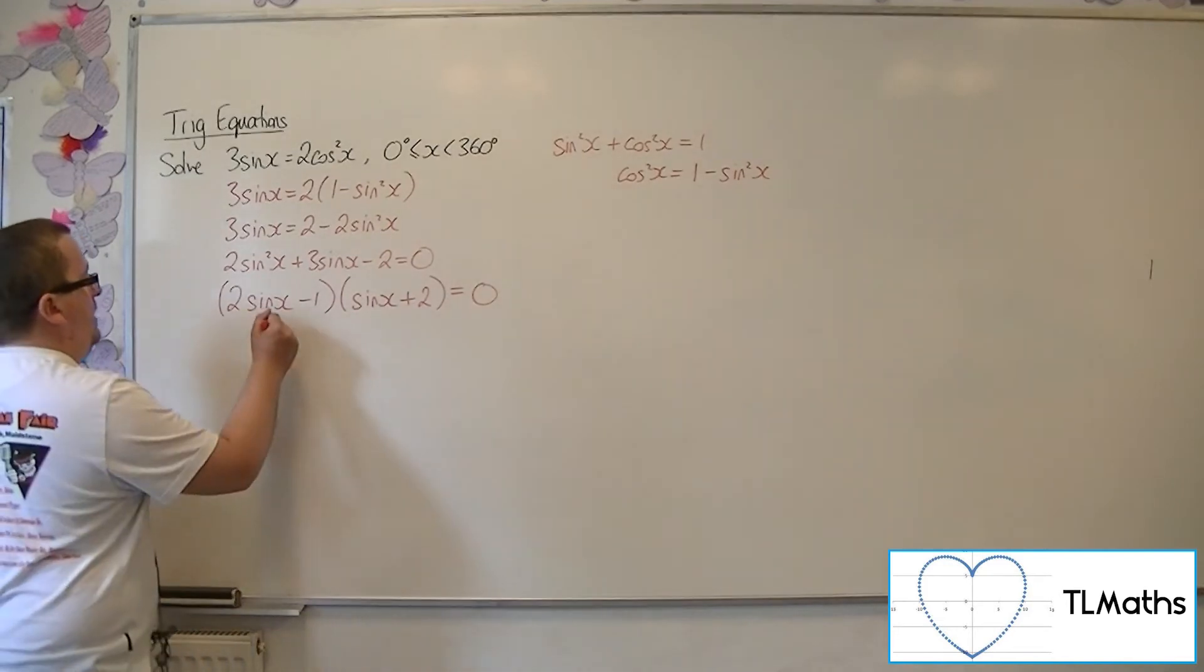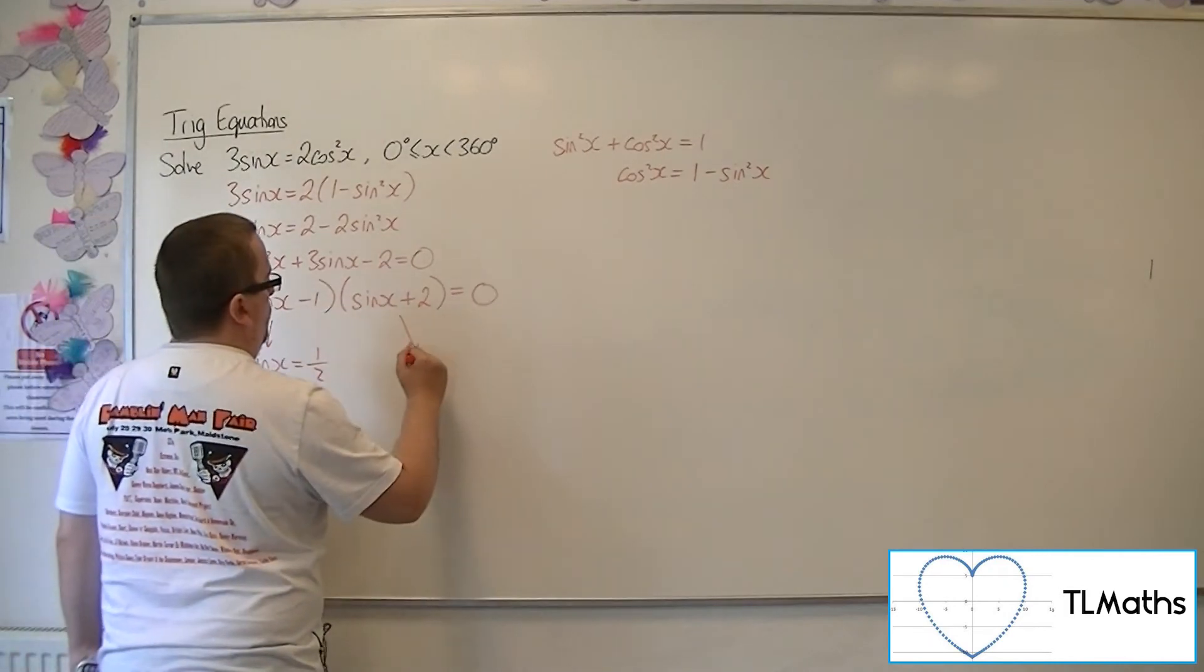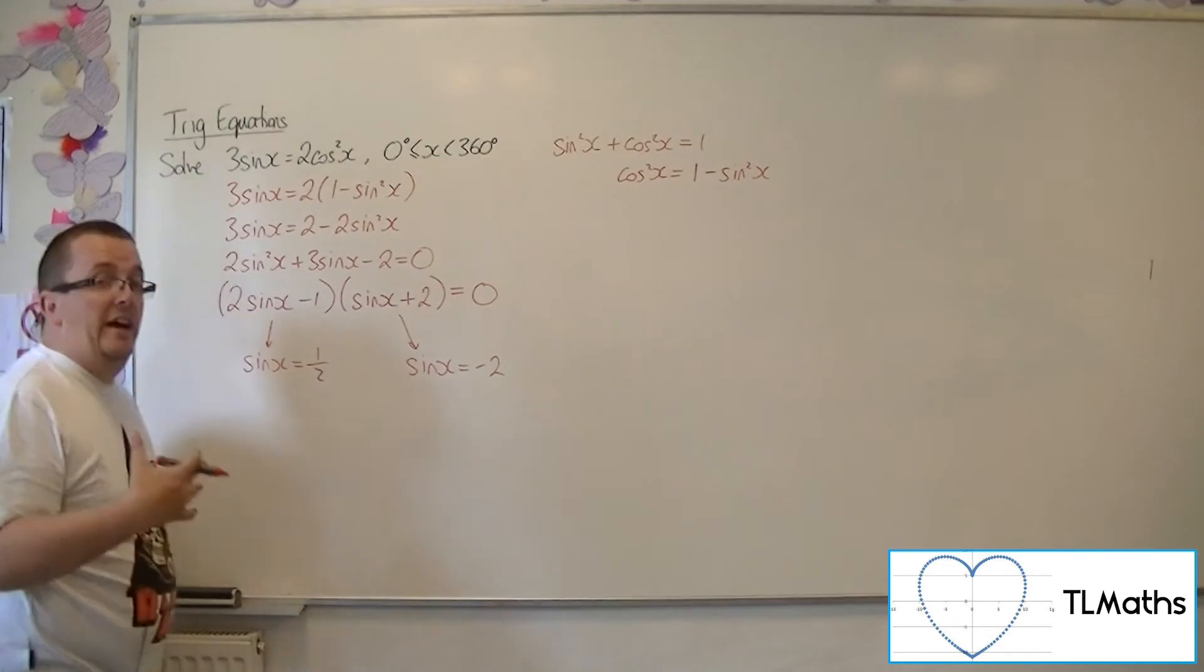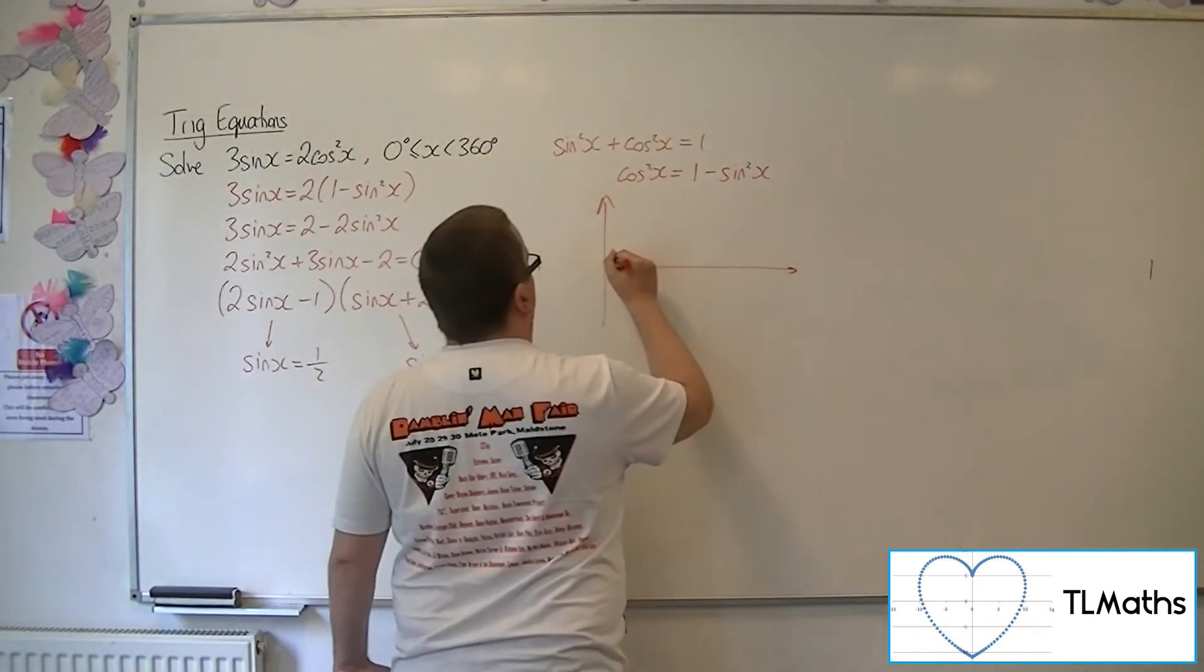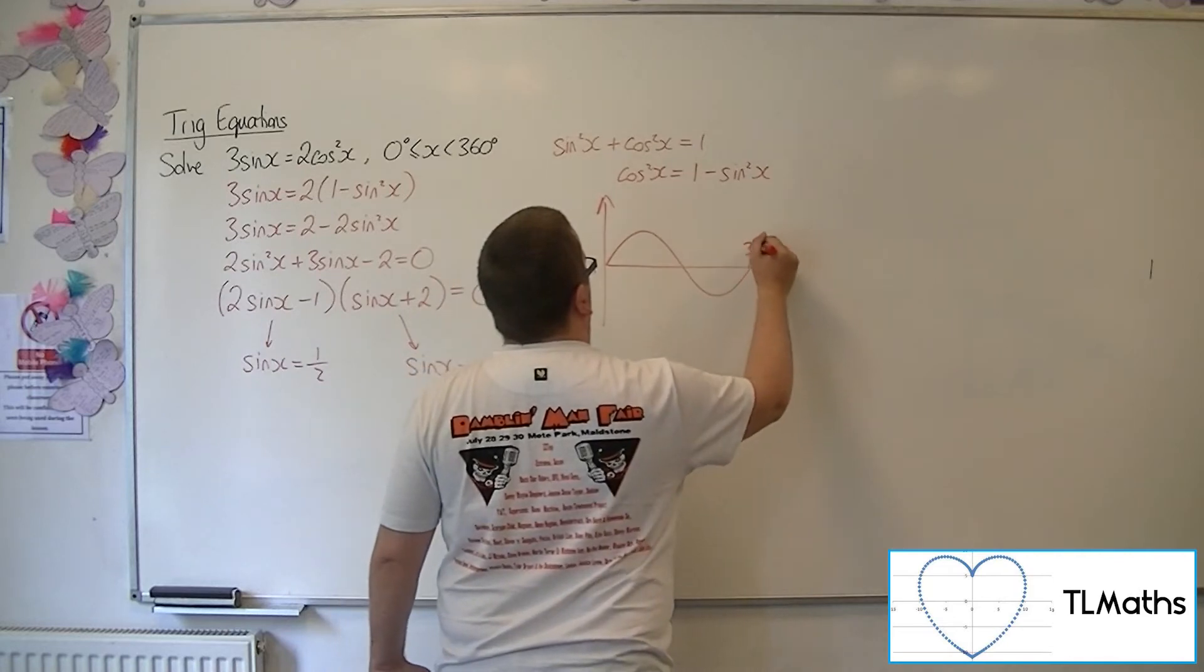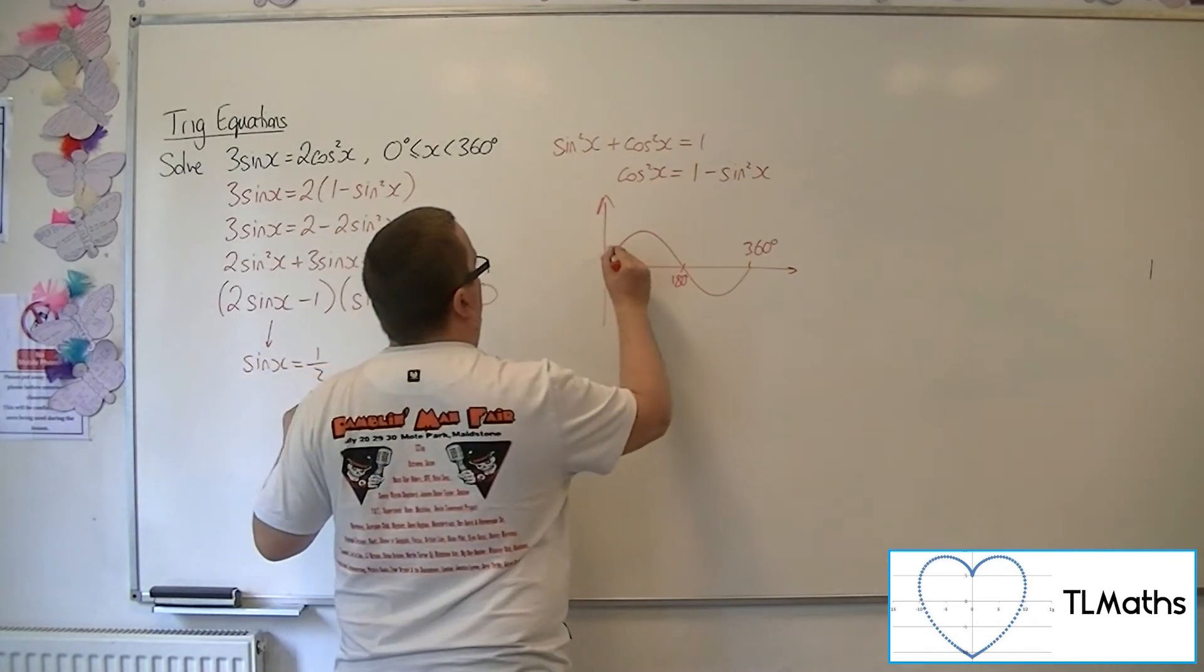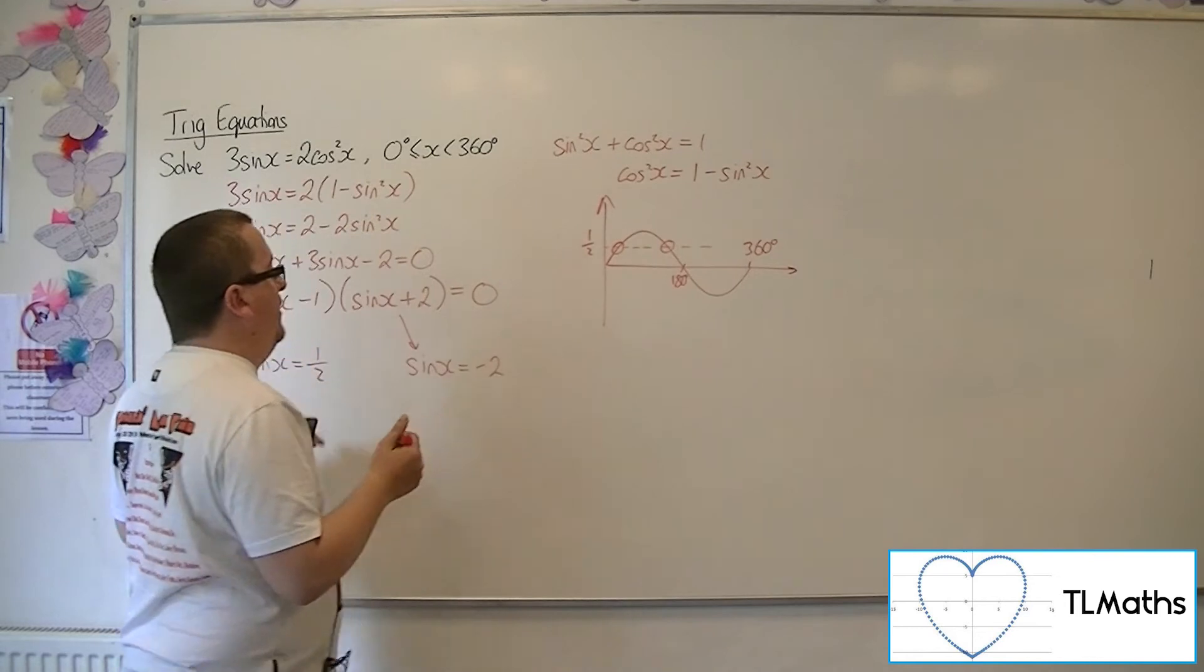So either sine x is a half from that bracket or sine x is minus 2 from that bracket. Now if we sketch sine x between 0 and 360, now sine x is a half gets me these two solutions here.